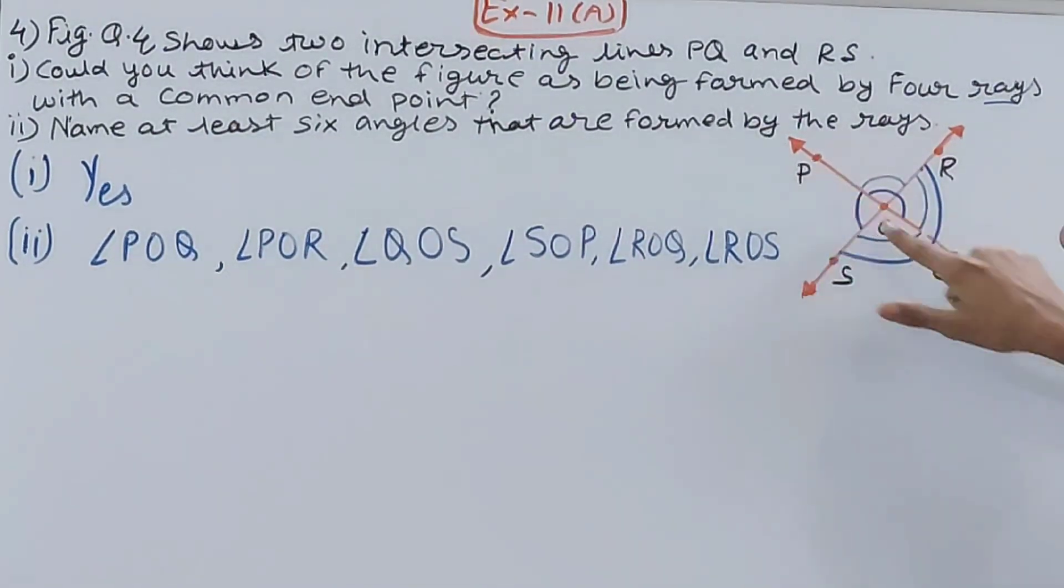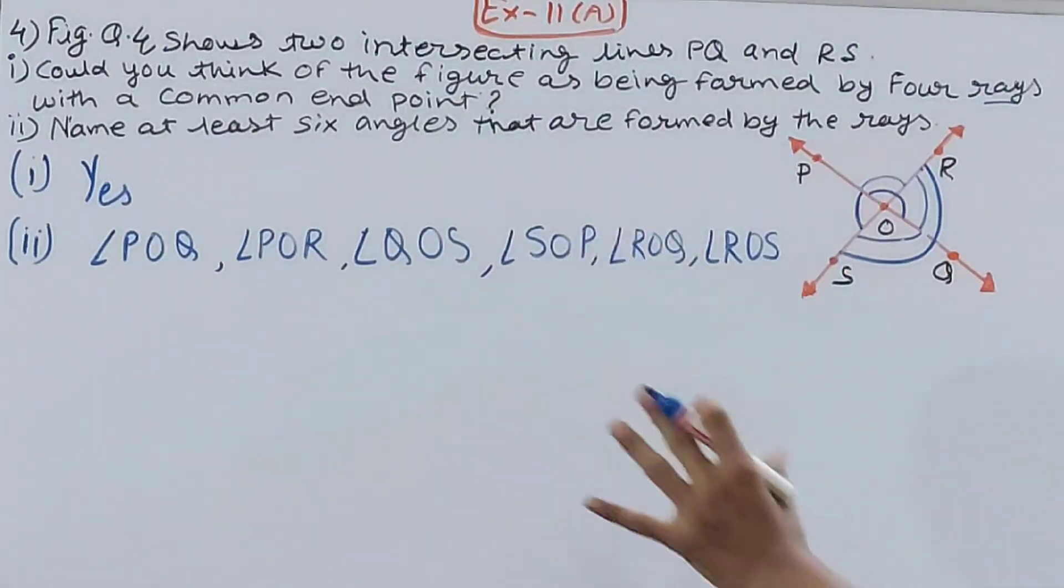You can go with this one also, you can see this one. You can also take other examples as well. You can go with POQ that we have already done here, so you can go with POS. Up to you, as many as you want. However, these are a few ones.